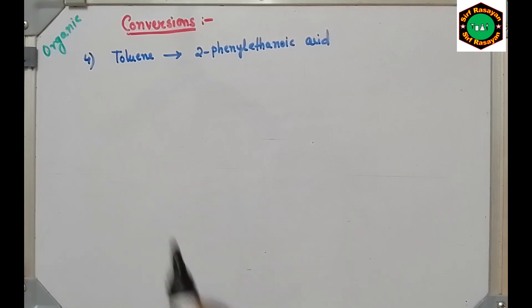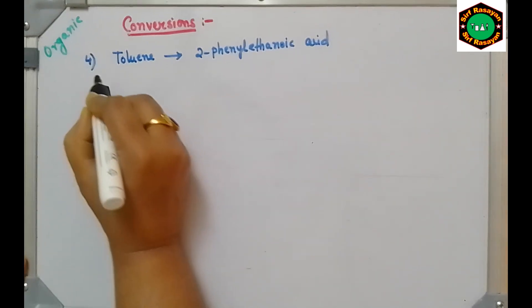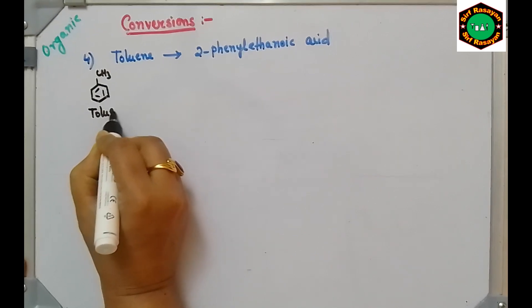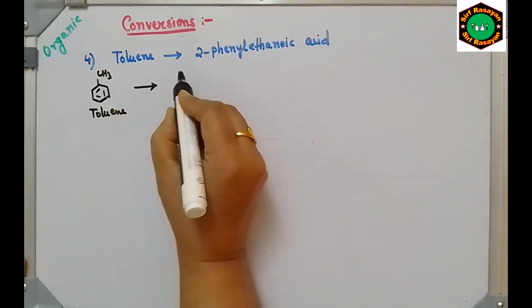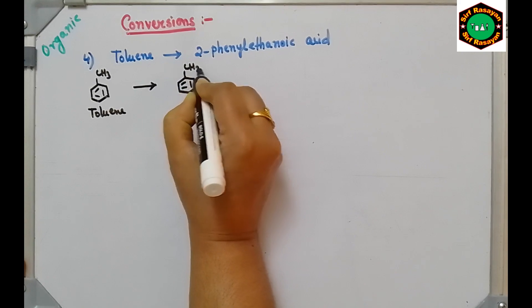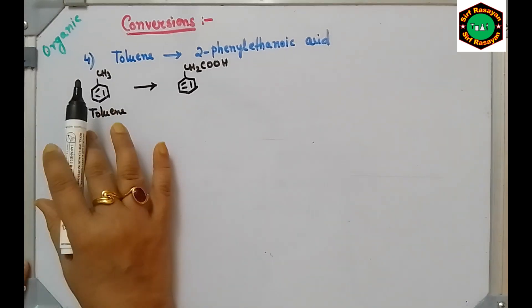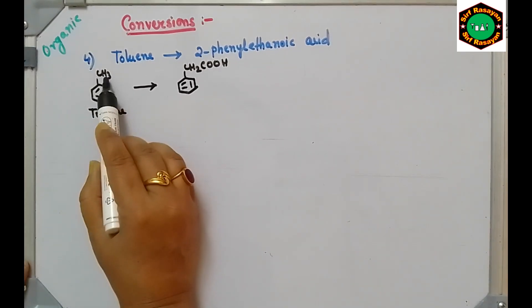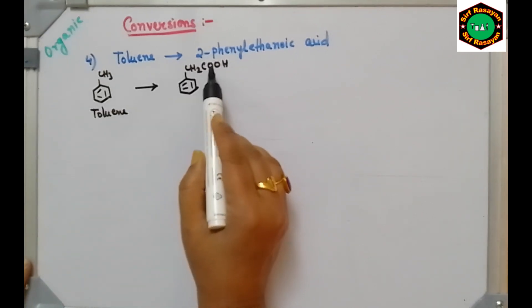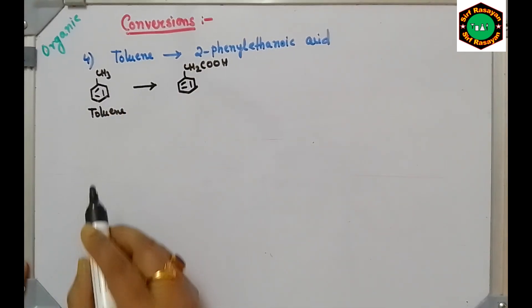Next conversion is toluene to 2-phenyl ethanoic acid. In toluene there is a methyl group (one carbon at the side chain), while the product has two carbon atoms at the side chain. So we have to do a stepping-up reaction.